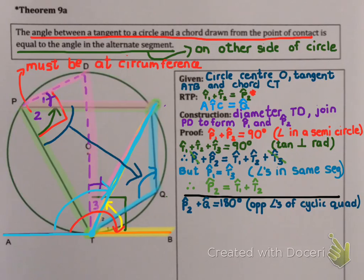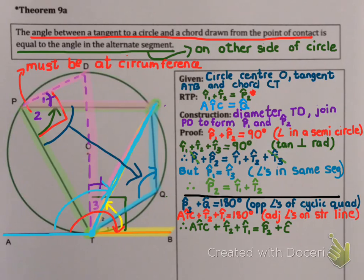I also know that ATB is a straight line, which means ATC plus T2 plus T1 equals 180 degrees. Adjacent angles on a straight line. But, the previous part, we proved that P2 equals T2 plus T1. So this is going to help us.